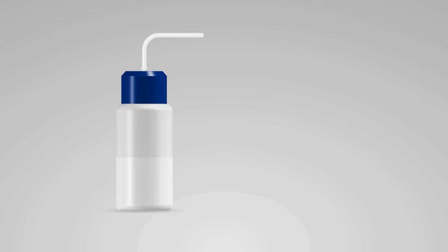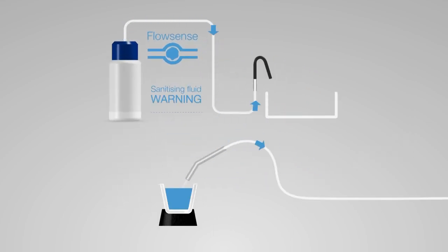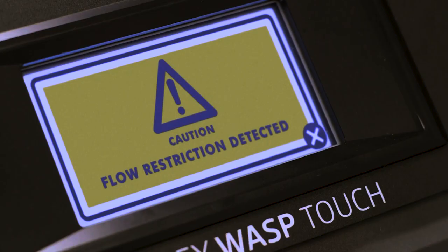Wasp Touch incorporates FlowSense, a unique system that continuously monitors the availability of sanitizing fluid and the movement of sample through the instrument. The user is immediately alerted to any reduction in performance to ensure continuous, problem-free spiral plating.